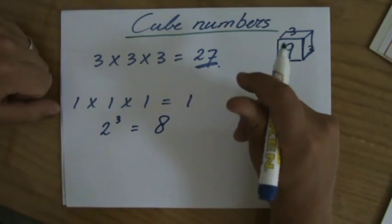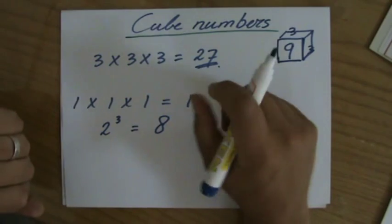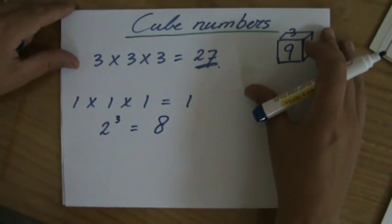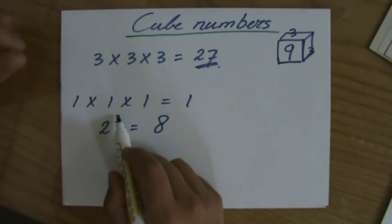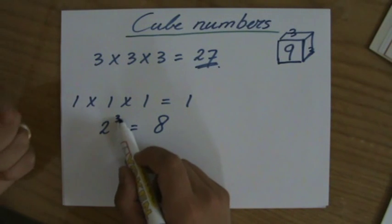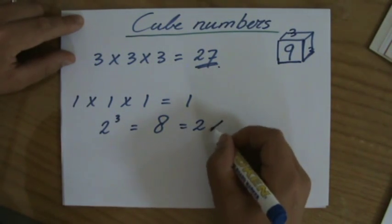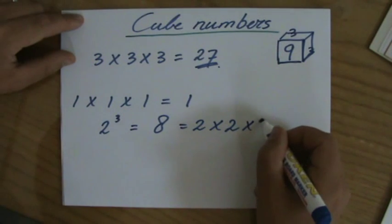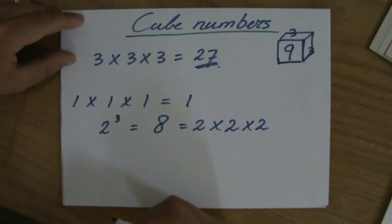Now if you just told yourself, oh the answer is 6, don't worry, you're not the only one. But stop saying that 2 to the power of 3 is 6. This is not 2 times 3. No, that is 2 times 2 times 2. So the cube number is 8.